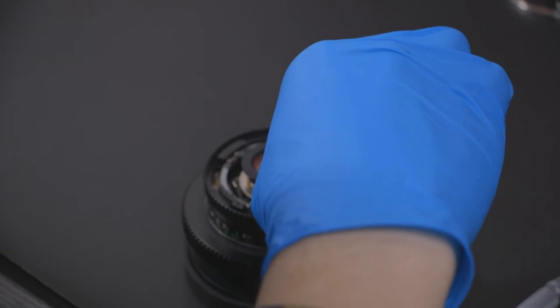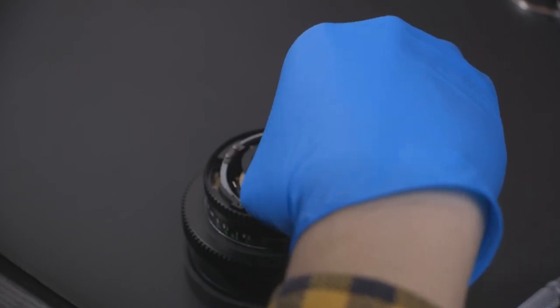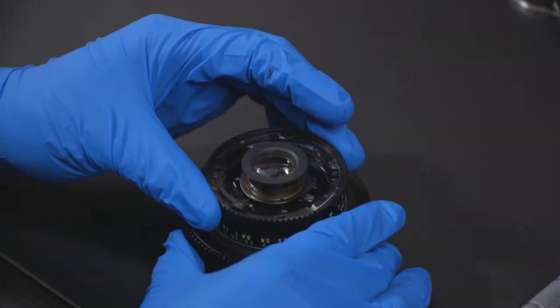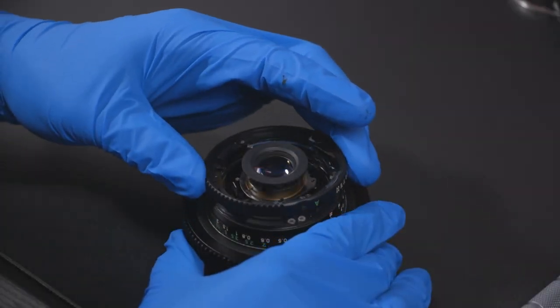Next, remove the thin silver ring from within the lens. Twist and lift the iris control ring to remove it from the lens.